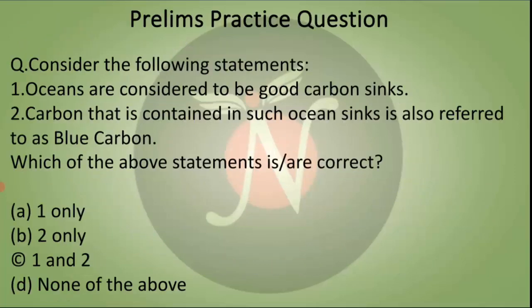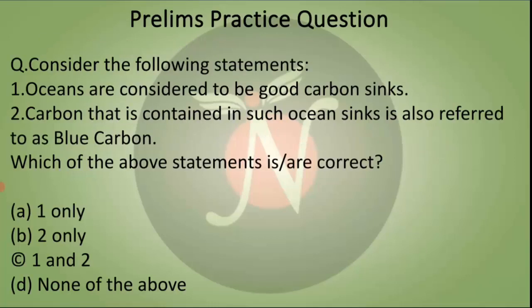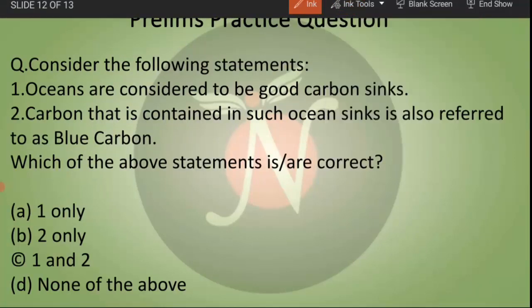India is a party to the CBD and ratified it in 1994. For today's prelims practice question: Statement 1 — oceans are considered to be good carbon sinks; Statement 2 — carbon contained in such ocean sinks is referred to as blue carbon. Which statements are correct? The answer is C, which means both statements are correct. The mains practice question asks: What are marine protected areas, why are they important, and what are the challenges associated with them — including anthropogenic pressures and climate change?